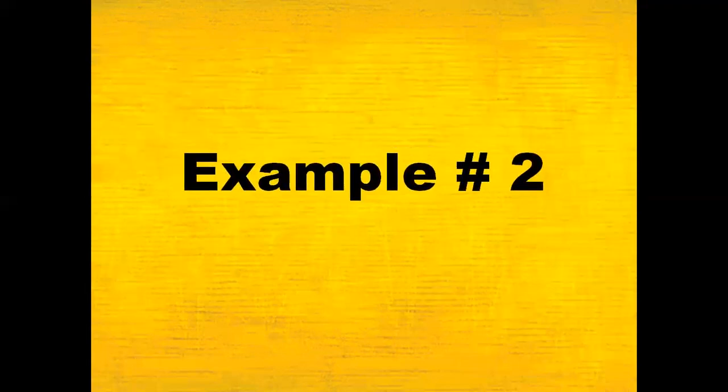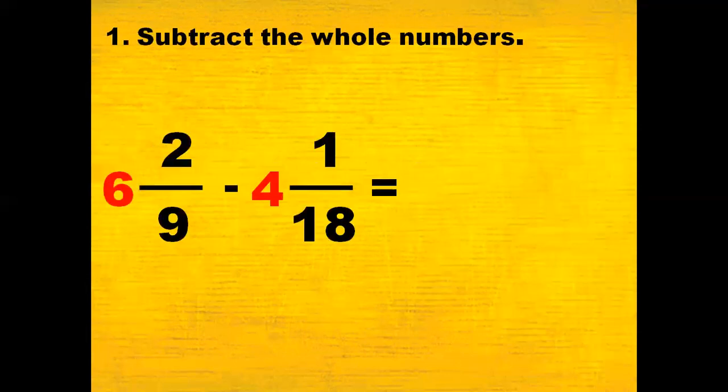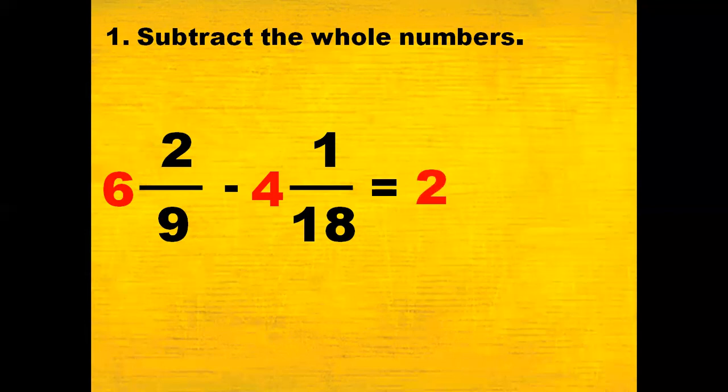Let's proceed with example number 2. We need to subtract the whole numbers because the given fraction is mixed. 6 and 2 ninths minus 4 and 1 eighteenth. The whole numbers are 6 and 4. 6 minus 4 equals 2.